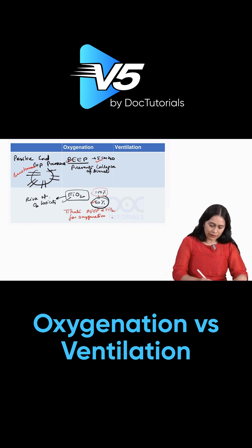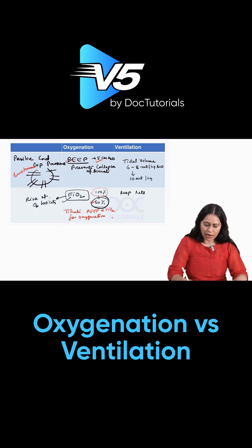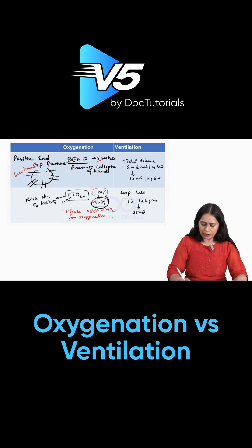Now ventilation. Two factors are responsible for maintaining ventilation: tidal volume and respiratory rate. For tidal volume, we normally start with 6 to 8 ml per kg body weight, and can increase it up to 10 ml per kg if adequate ventilation is not achieved. Respiratory rate, we start with 12 to 14 breaths per minute and can increase it to 25 to 30 breaths per minute if adequate minute ventilation is not being achieved.